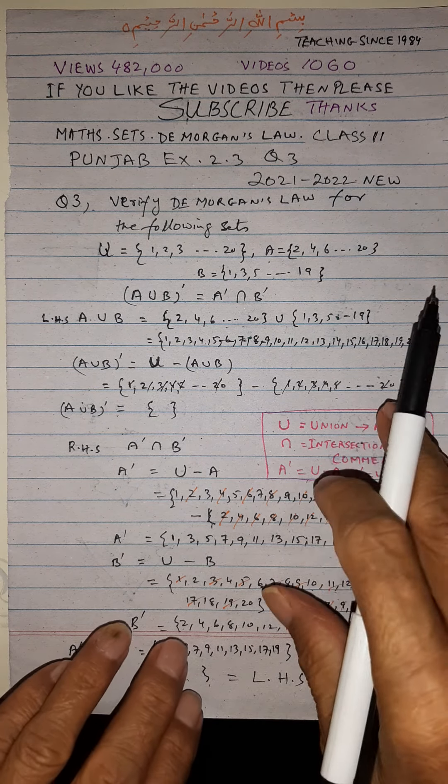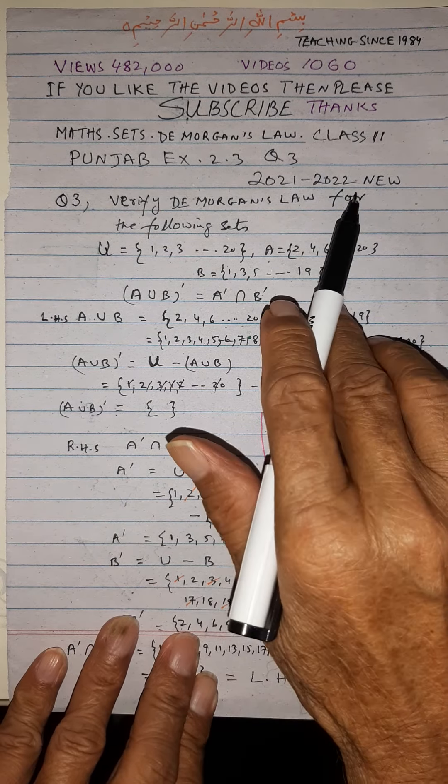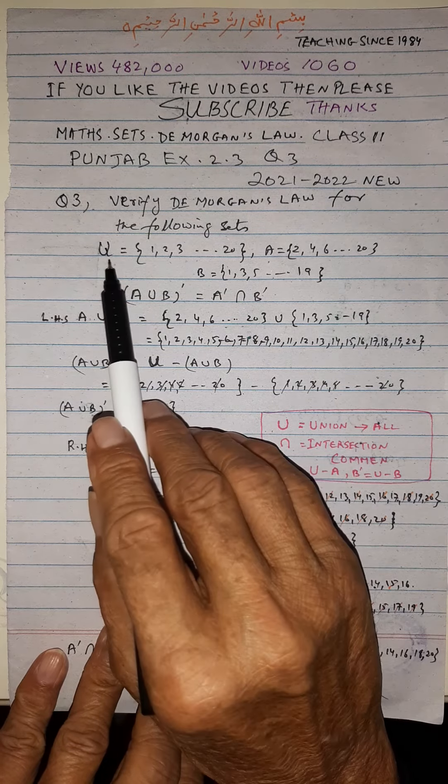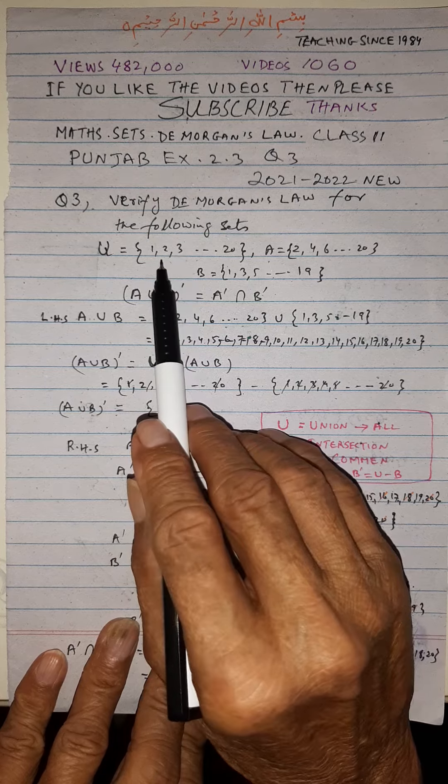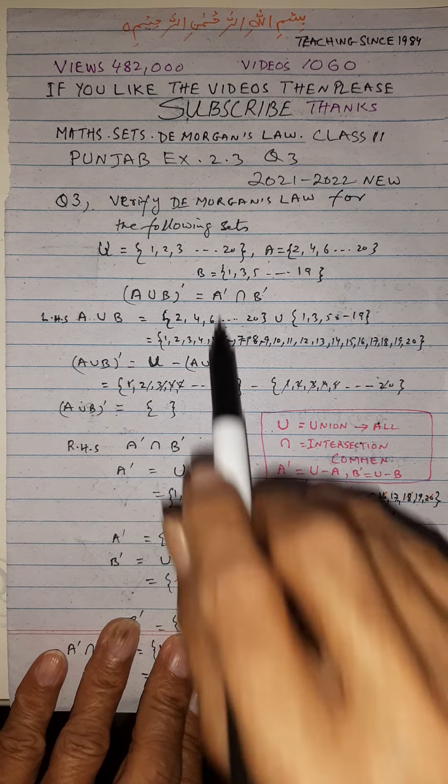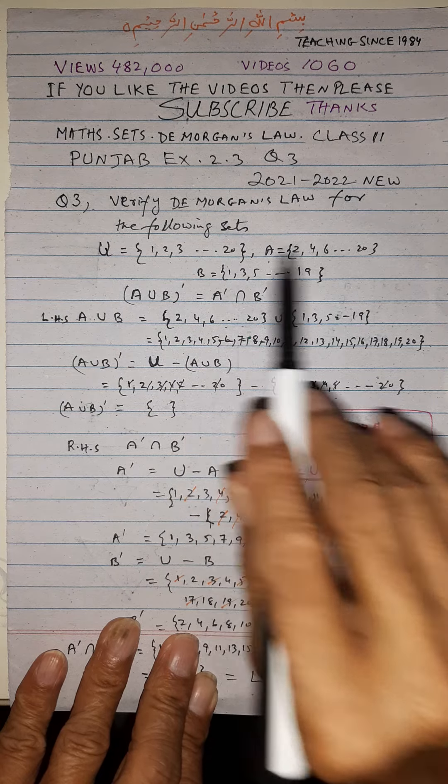Bismillahirrahmanirrahim. Today we have to verify De Morgan's Law for the following set. The universal set is given as 1, 2, 3, till 20. This is natural numbers till 20, from 1 to 20.